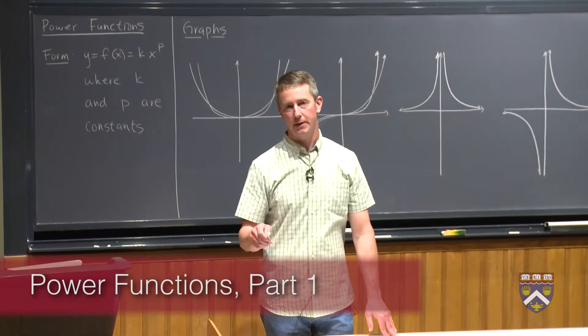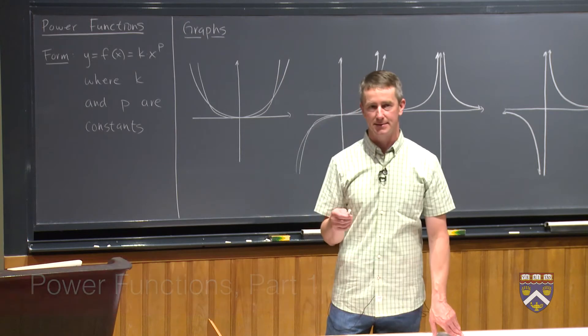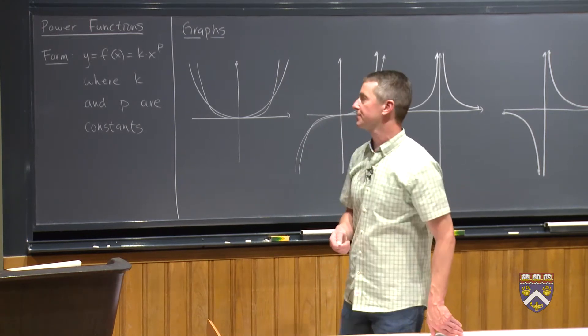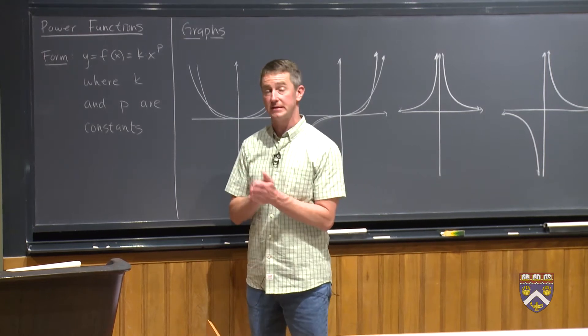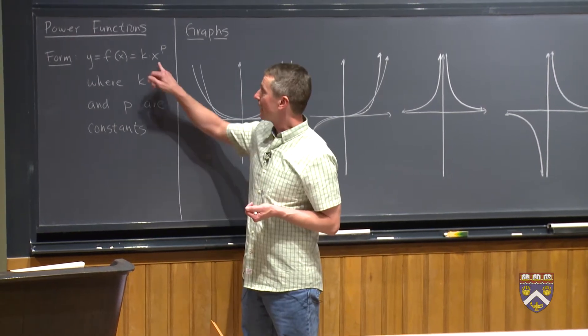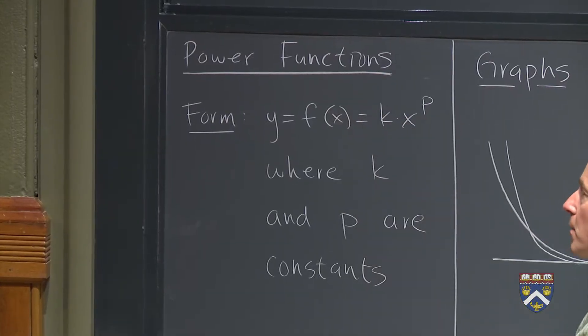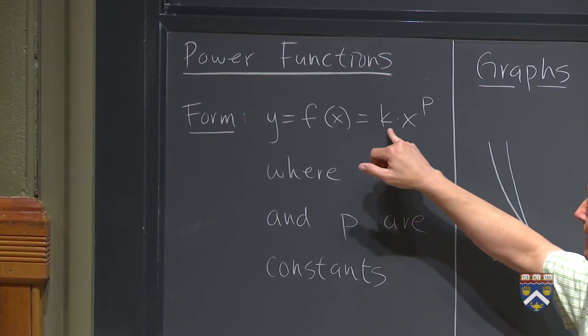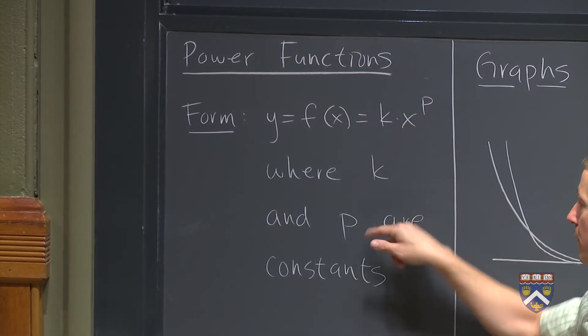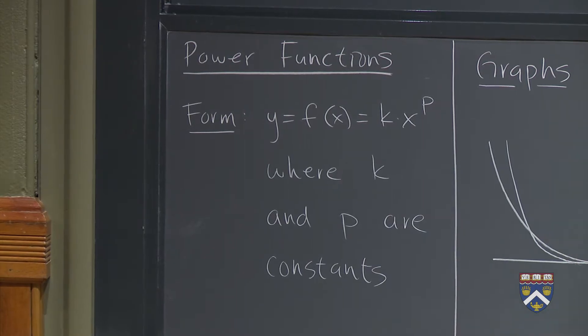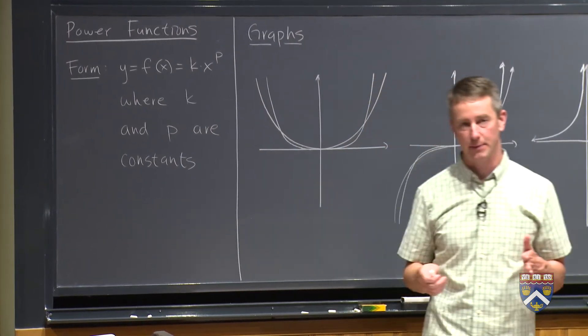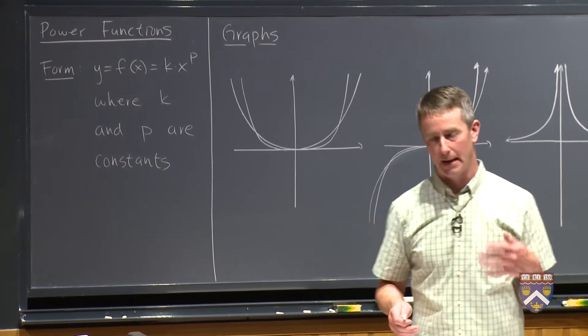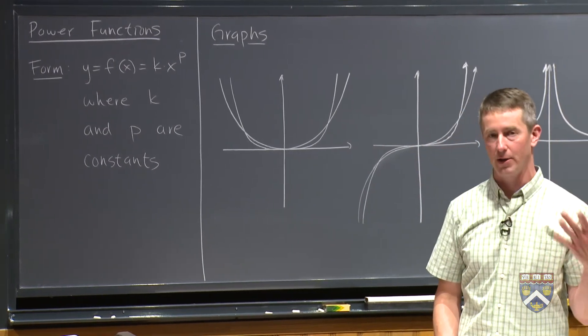Welcome back everyone. As we discussed last week, not every function that has an exponent is an exponential function. For example, we looked at functions such as x squared and x cubed. These are called power functions where they're written in the form y = kx^p, where k and p are constants. So x squared would be a power function, not an exponential function. Just as a reminder, an exponential function is when you have the variable in the exponent.